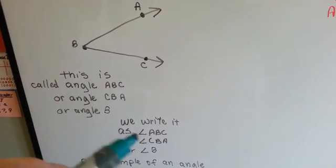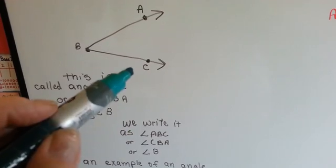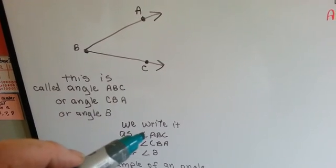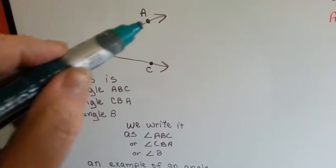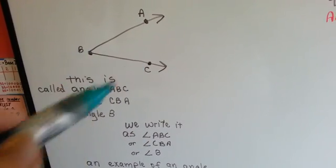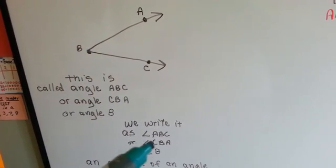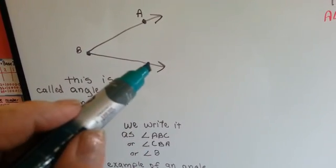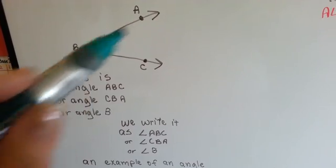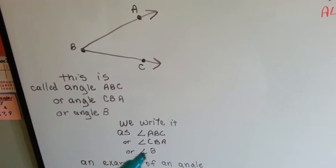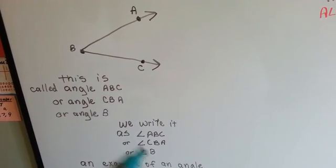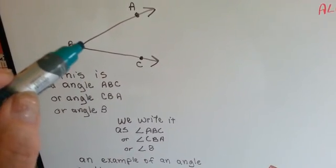We write it as a little angle sign like this and put ABC, or the little angle sign and go the other way CBA, or the little angle sign and put the B.